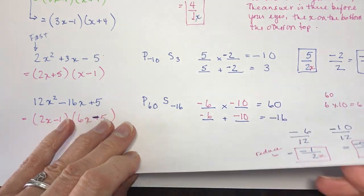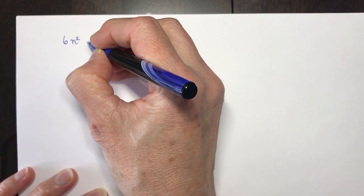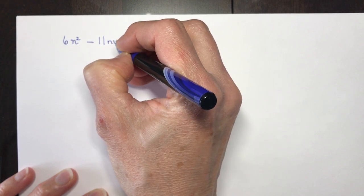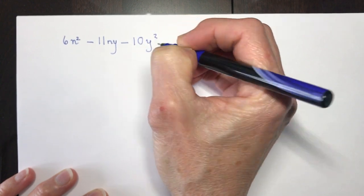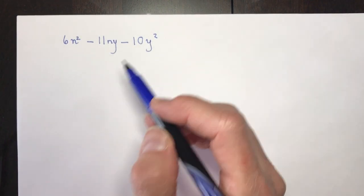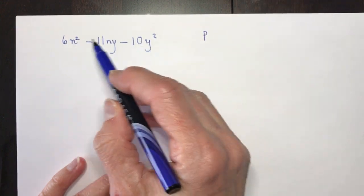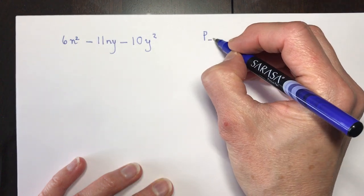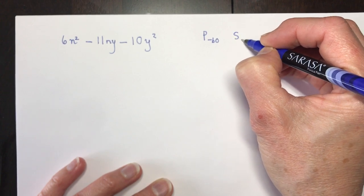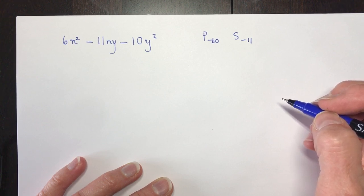Another one bites the dust! Now let's try one where sometimes your trinomials have two variables in them — it could be x's and y's; in this case I'm doing n's and y's. This is where students say, how do you do this one? What you want to do is forget about the second variable for a second and just factor it like you would anything else. So I want the product of the first and the last — we're only looking at the coefficients here. 6 times minus 10 is minus 60. The sum of the one in the middle is minus 11. What multiplies to minus 60 and adds to minus 11?